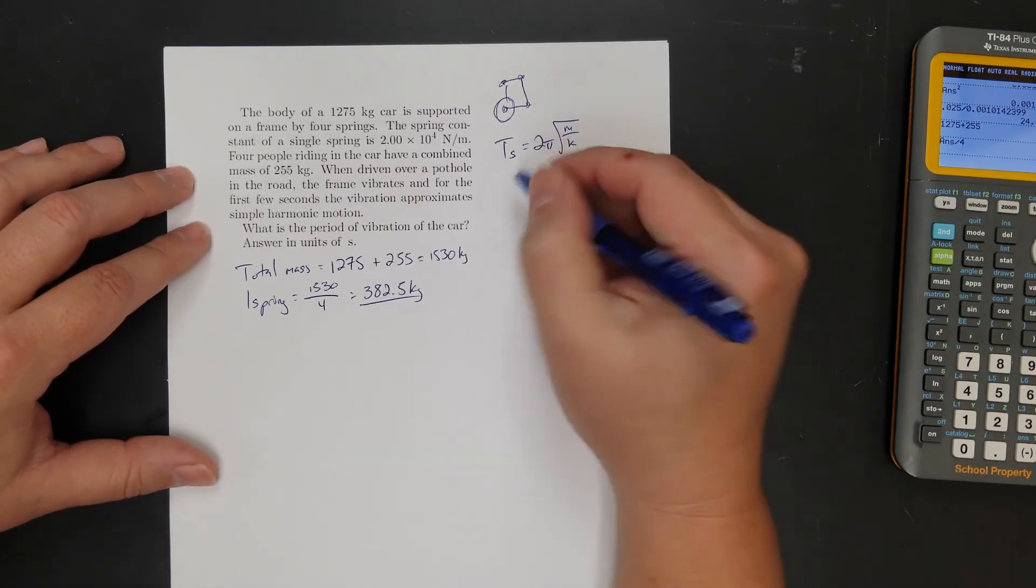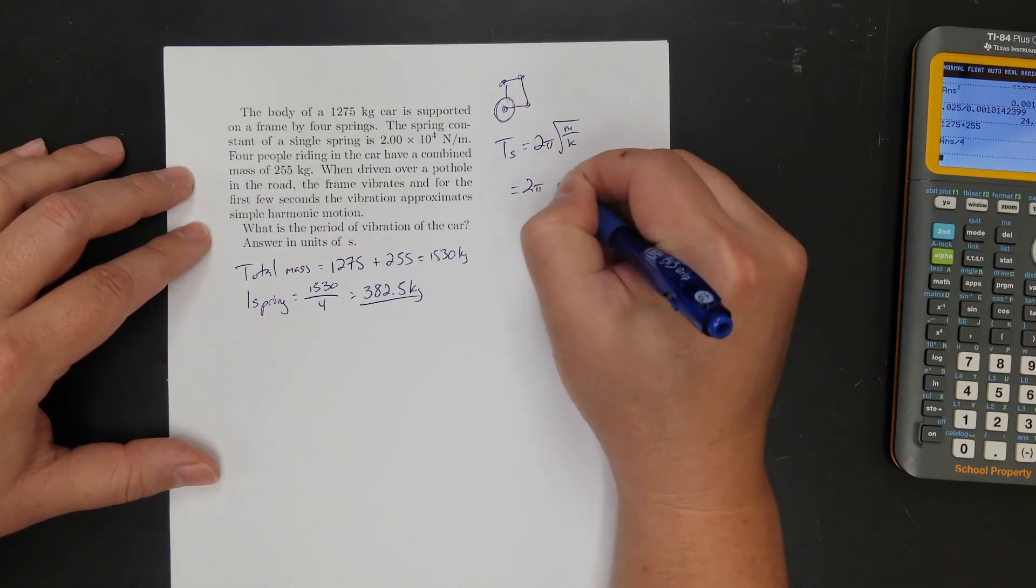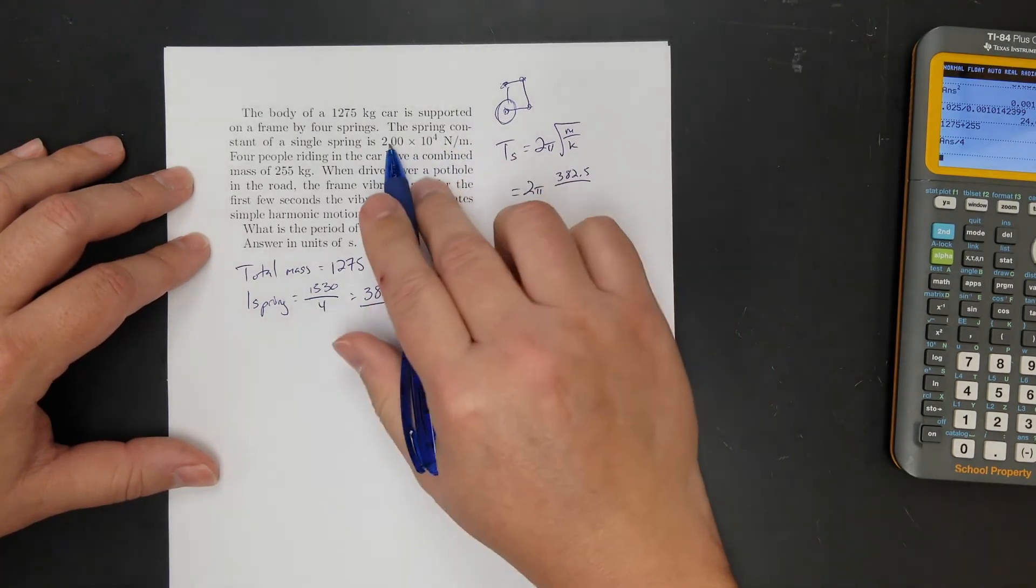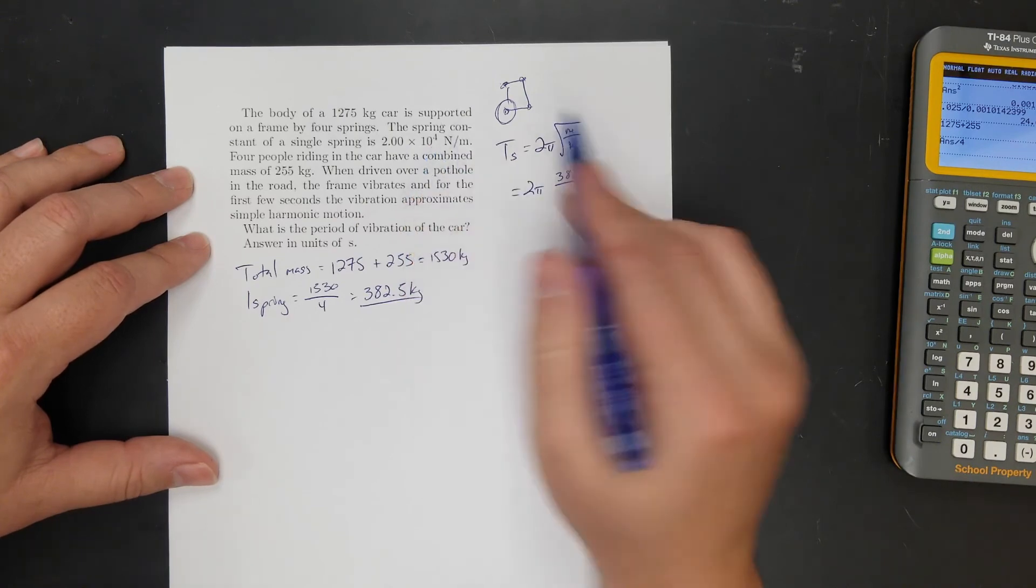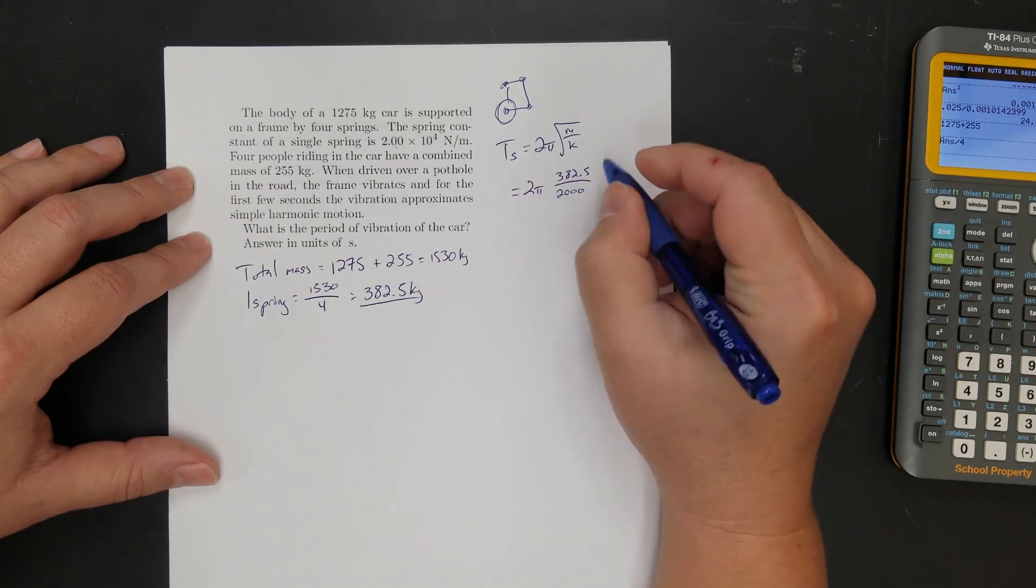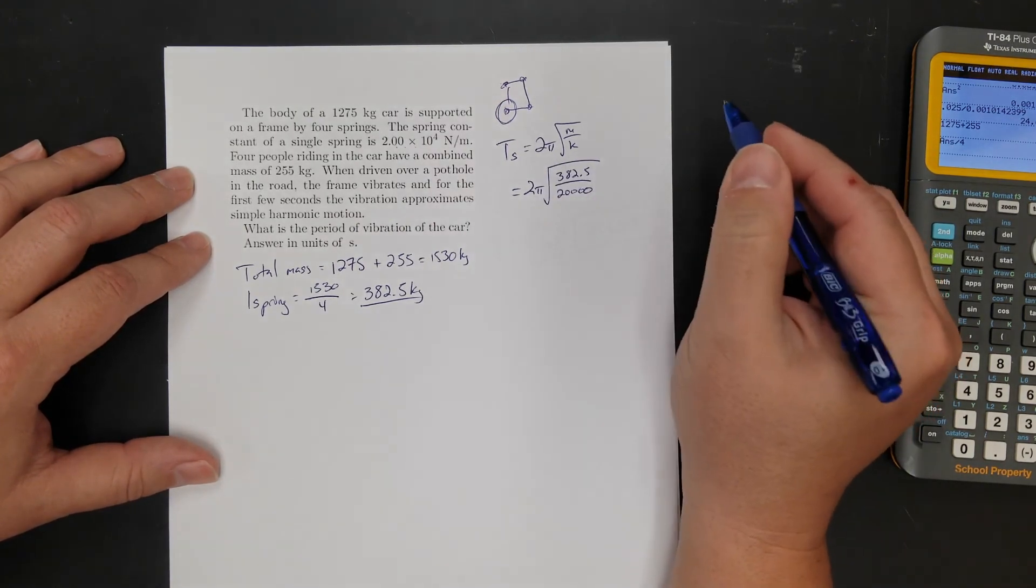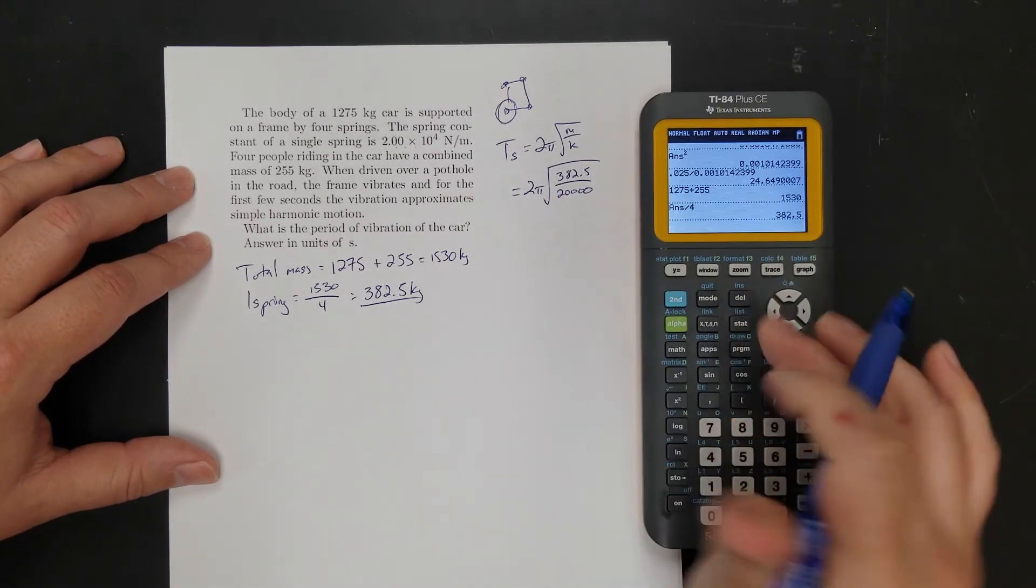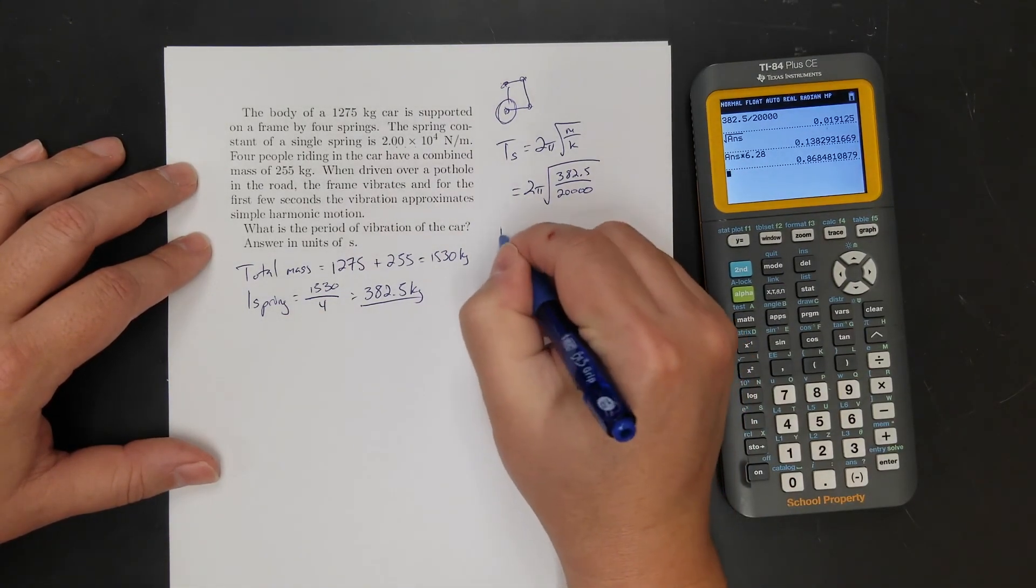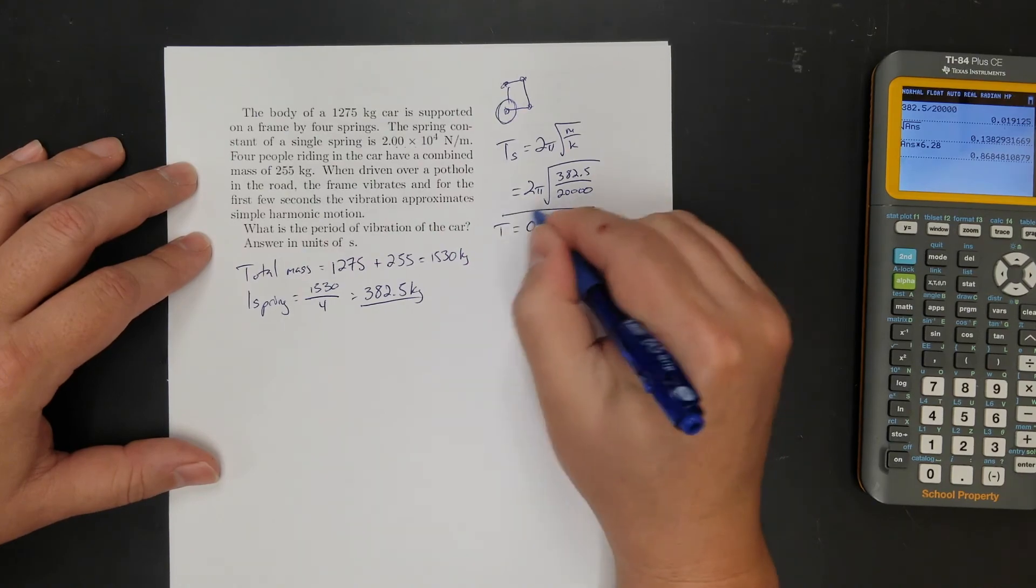Oh, now it's easy. So let's just plug in and solve. So I'm going to say the period of a spring is 2π times the square root of the mass, which is 382.5 over the spring constant. Two times 10 to the fourth. Two times 10 to the fourth is what? One, two, three, four. Yeah. There we go. Square root of that. Okay. And so I get my period is 0.8. We'll call it 0.87 seconds. There we go. Thank you.